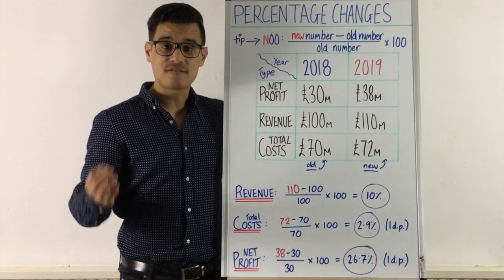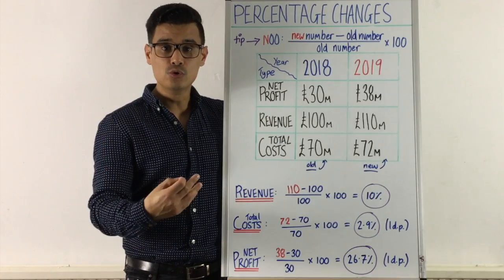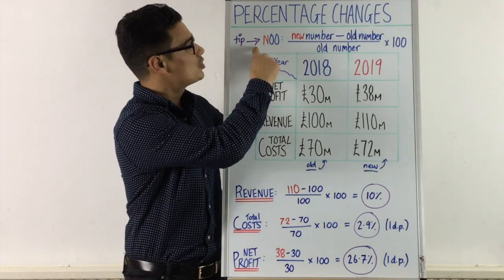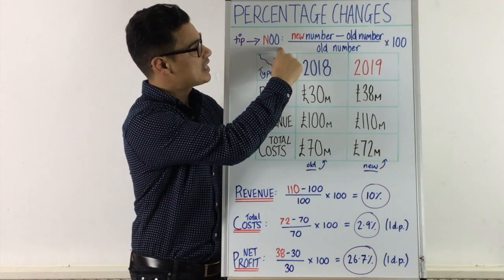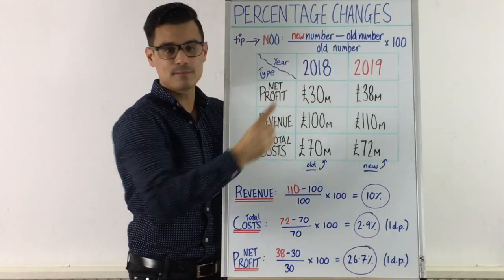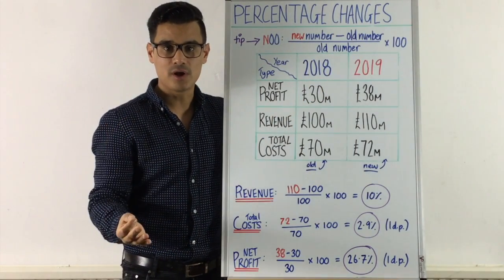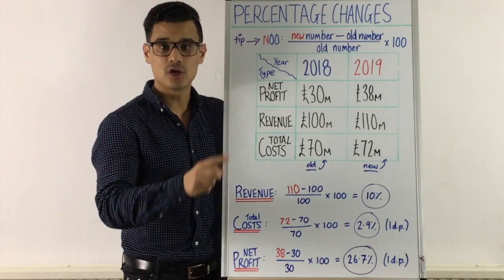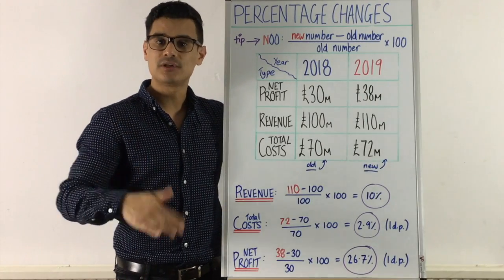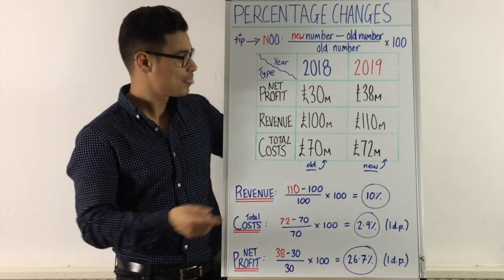Percentage changes — the thing you need to remember, the tip is NUUU. NUUU stands for new number minus old number, divided by old number, times by 100. That's NUUU minus old over old times by 100, because it's a percent. Let's go through a question.